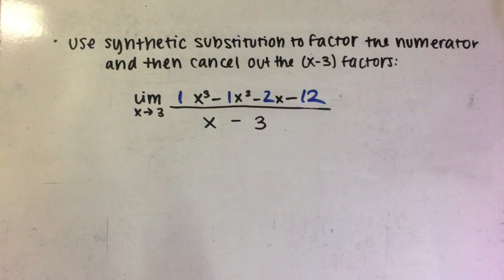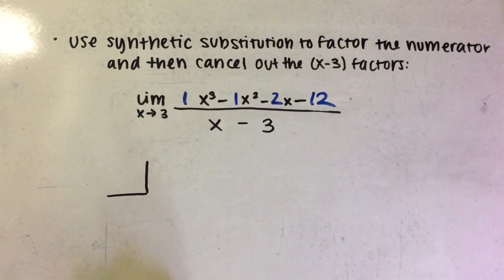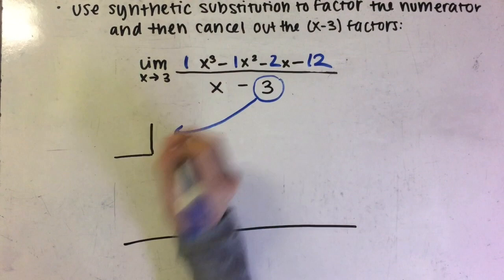Knowing this, we will now use synthetic substitution to factor out the numerator and then cancel out the x minus 3 factors. Here are the rules for synthetic substitution. Looking at our equation, we first take the number from the denominator that is being subtracted from x, which in this case is 3, and put it in the box.